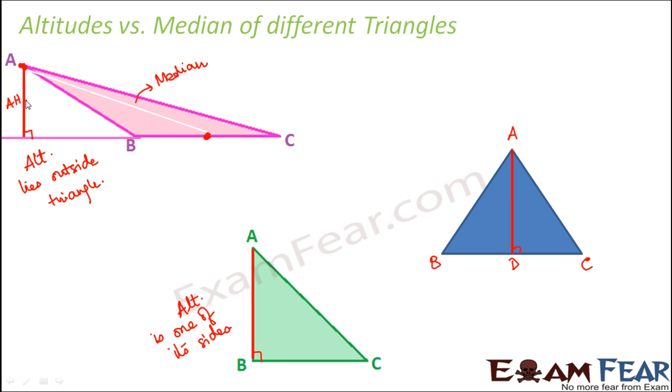Similarly when you talk about the right angle triangle here again you would draw a line from here but this has to connect to the midpoint of the opposite side. So this is the median and this is the altitude.